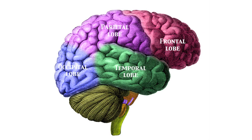The parietal lobe is important for spatial functions — parietal lobe damage causes you to ignore the opposite side of your world. The occipital lobe houses primary visual cortex. The temporal lobe handles higher visual function and memory. The cerebellum is important for fine motor movement.